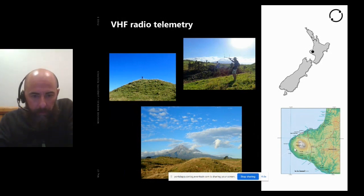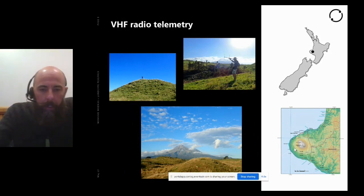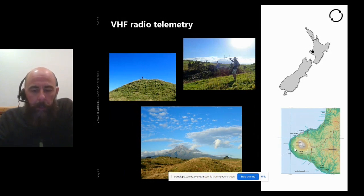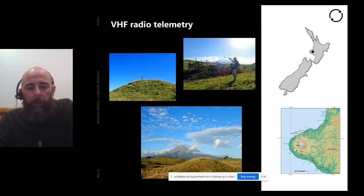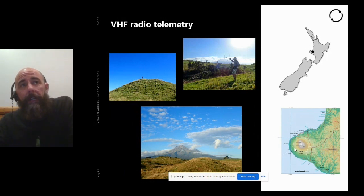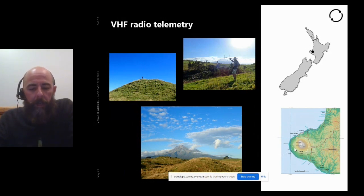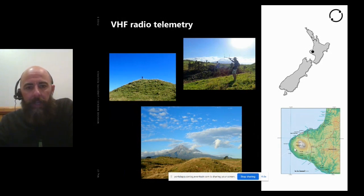That bottom photo shows Taranaki / Mount Taranaki in the background — it's very hilly with a lot of obstructions and you can rarely find lines of sight. Ultimately we did end up using some fixed-wing aircraft to get telemetry data, but that was inconsistent and costly. Regarding the GPS tags, we still needed to relocate the individual to download data, though if we could get close enough we could download GPS data via the VHF signal.